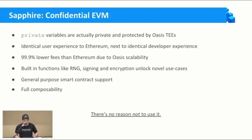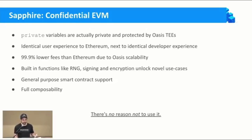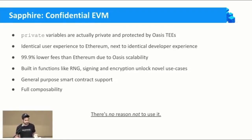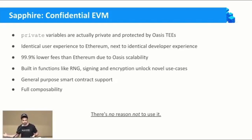The benefits of the Oasis Privacy Layer: private variables are actually private and usable in your layer one DApp. You can use the exact same tooling you've been using for Ethereum — Hardhat, MetaMask, Solidity, Vyper — everything you already know and love. You get low fees, RNG for games, end-to-end encryption, and it's completely easy to use. The main exception is if you already have a layer one DApp with tons of users and TVL and just want to add privacy without migrating users.